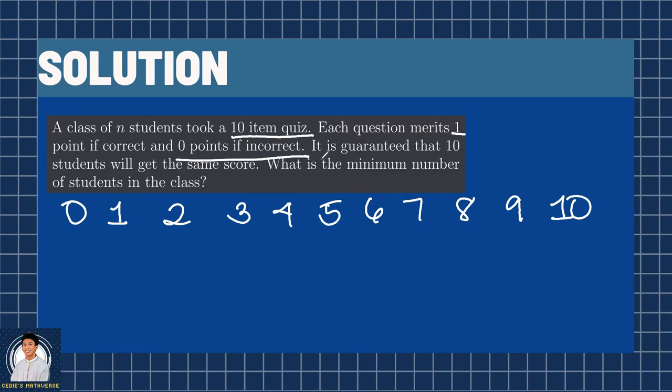However, it is guaranteed that 10 students will get the same score. We will think of a scenario where there is a possibility that no 10 students will get the same score. How could that happen? How would such a scenario happen? We do that by assigning 9 students for each score. So, we have 9 students who scored 0, 9 students who scored 1, and so on.